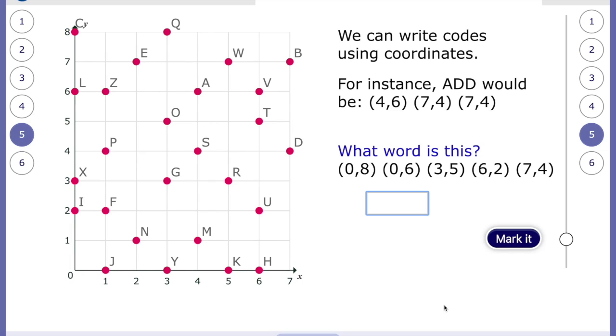What word is this? Pause the video and then have a go at writing the word. When you've done it, press play and see if you're right. Pause the video now. So let's have a look. First letter is zero, eight. So here's zero. I'm going to read all the way up to eight. It's C. Then we have zero, six. Here's zero again and six. L. Three, five. Three, five. O. Six, two. Six, two. U. And the last one. Seven, four. D. Cloud. Well, you're right. Let's hope so.